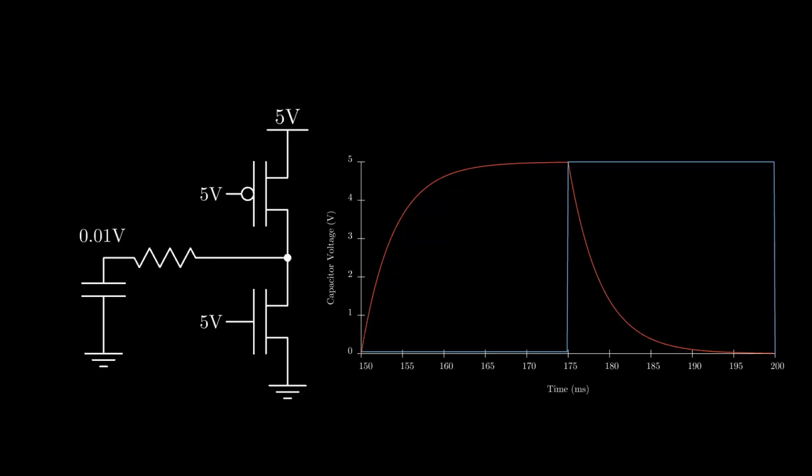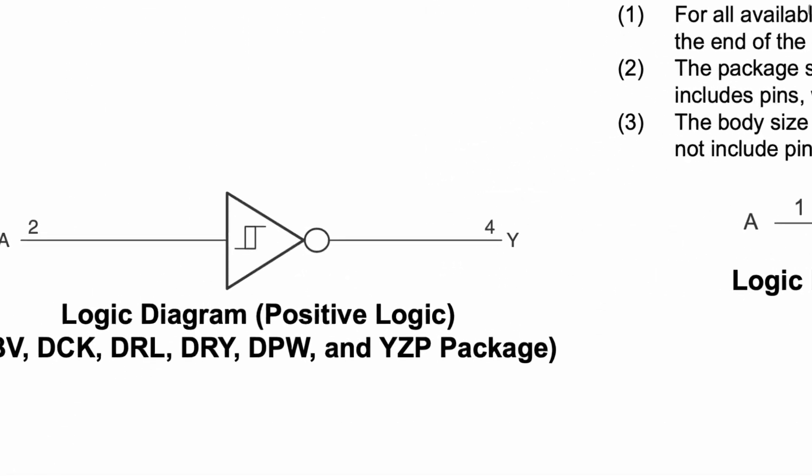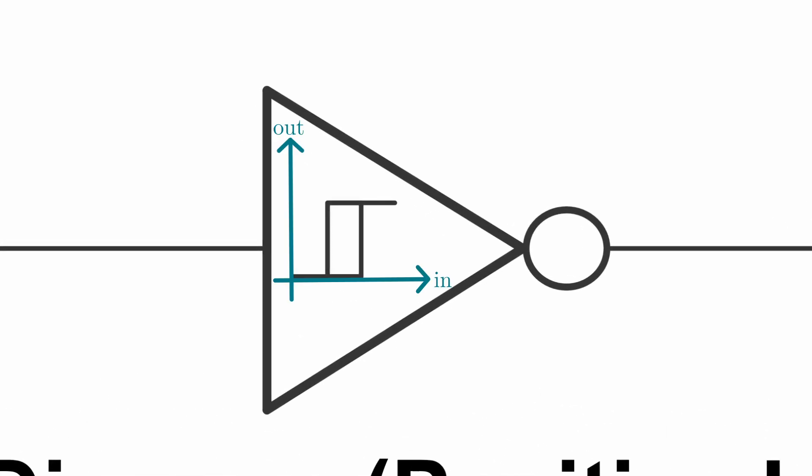The component we can use to achieve this is called a Schmitt trigger. The Schmitt trigger I'm going to use is the 74 LVC 1G14. Now this is actually an inverting Schmitt trigger and the reason we need this relates to the observation that we made earlier. That is, the signal that we need to activate the appropriate transistor is always inverted compared to the capacitor voltage. If we scroll down to the logic symbol we can see a representation of what's called hysteresis, and this is where the magic of the Schmitt trigger lies.